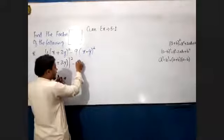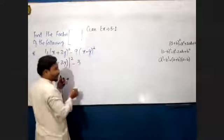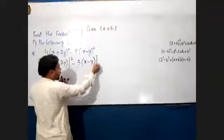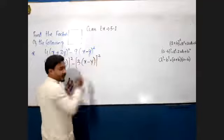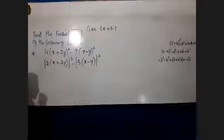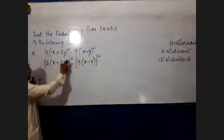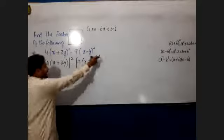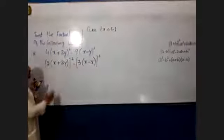So, 9 squared is 3. We have (3x-y) whole square. Now, 2x+2y can come out of the power and 3x-y can come out of the power. So, this is a square minus b square.